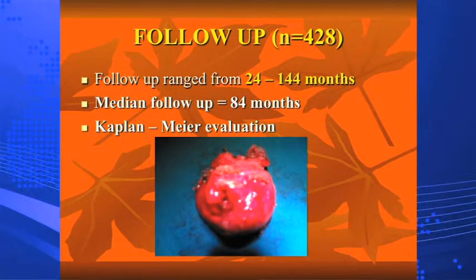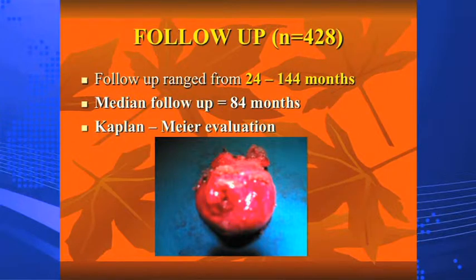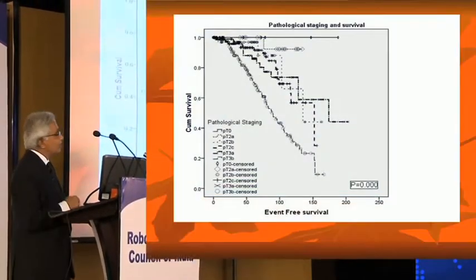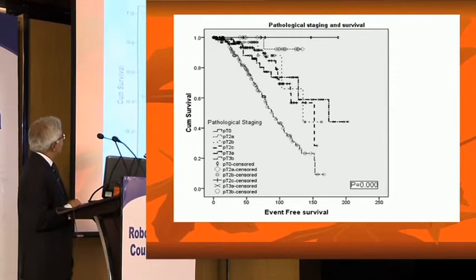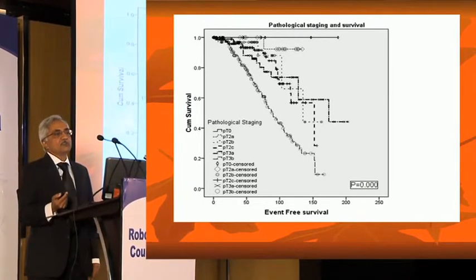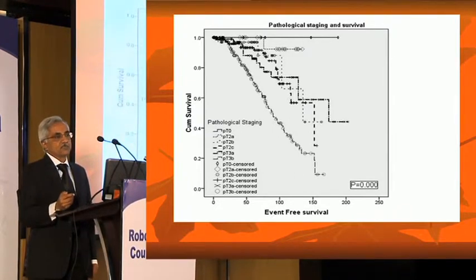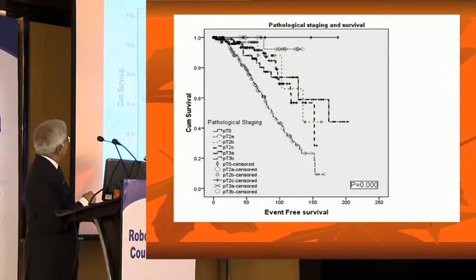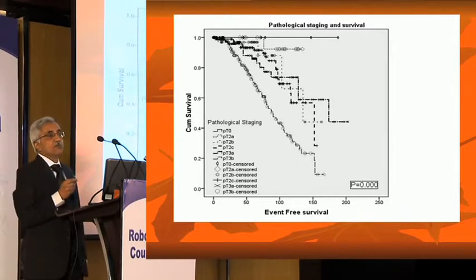Follow-up: the median follow-up was 84 months. Looking at the survival graph by pathological stage — pT0 indicates cases where biopsy was positive but no tumor was found on the specimen. As stage increased, survival decreased, but even at 7 years with advanced disease, outcomes were not bad and disease could be managed.